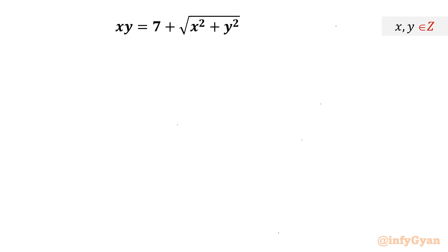Welcome back to Infigyan friends. Today in this video we are going to take up one very interesting and challenging radical Diophantine equation: xy equals 7 plus the square root of x² plus y². We have to find out all integer solutions.